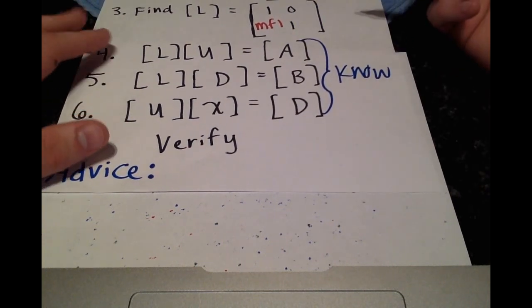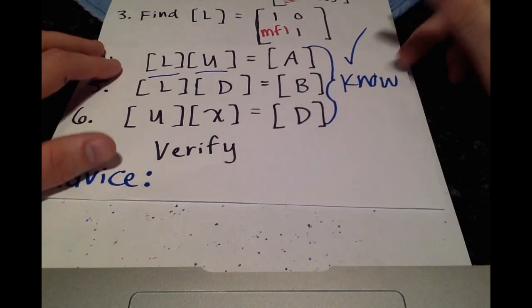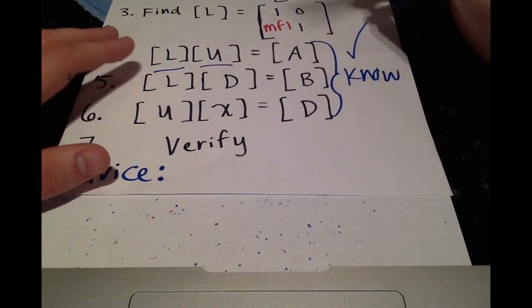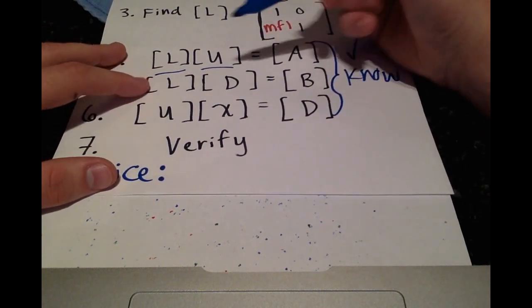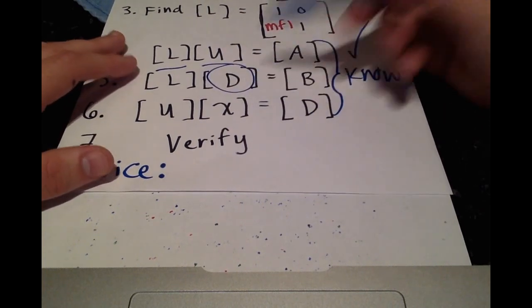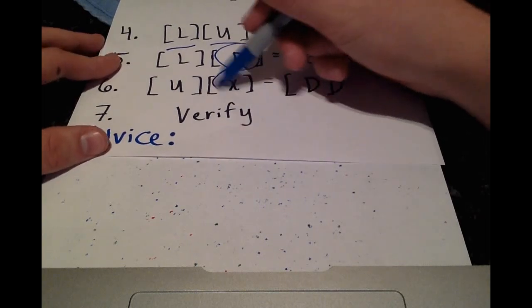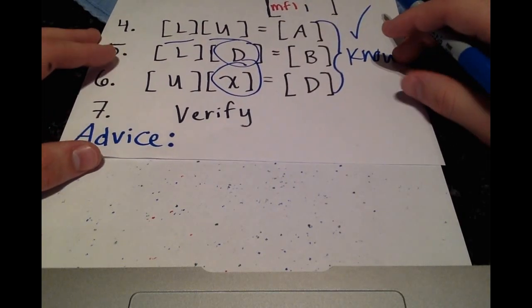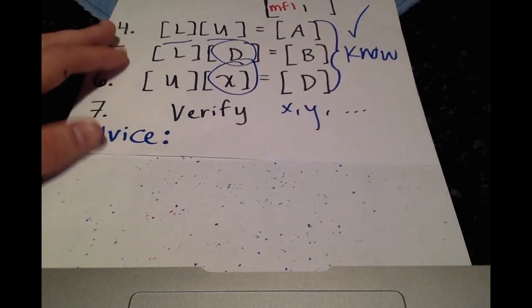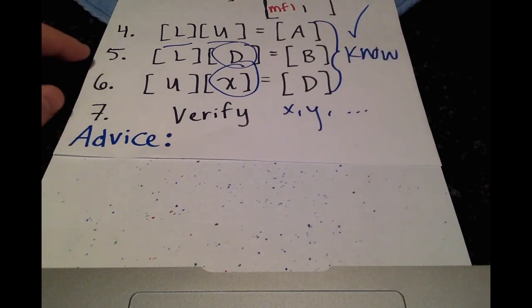L U equals A. So we do that to verify that both L and U are correct. And then you use L and B to solve for D with the relationship L D equals B. And then once you have D, you use the relationship U X equals D to solve for X. And our last and final step is to verify our X, Y, and what other variables we have into our original system of equations to make sure they're right.